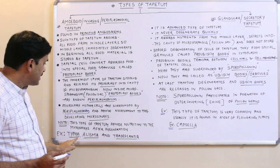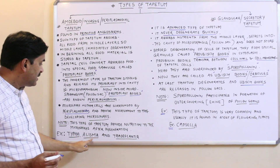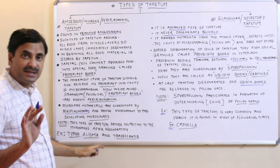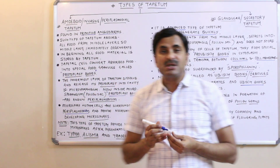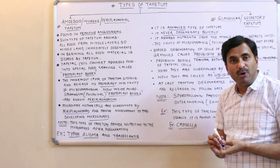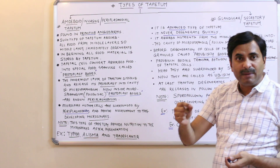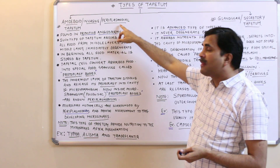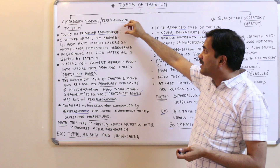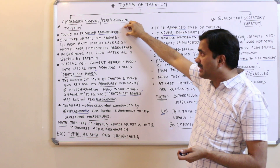This type of tapetum is found in Typha, Elysia, and Tradescantia. So the first type of tapetum — the amoeboid tapetum, also called invasive tapetum or periplasmodial tapetum — is the primitive type of tapetum.